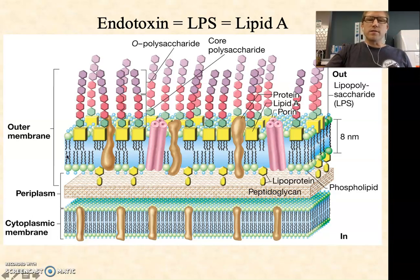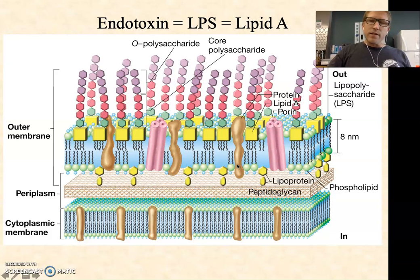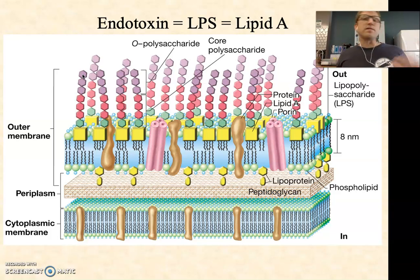Lipid A is a structural part — this is a cross-section of gram-negative bacteria — it's a structural part of the lipopolysaccharide molecules that make up the majority of the outer leaflet of the outermost membrane. Gram-negatives have two membranes: an inner membrane and an outer membrane. In the outer membrane, the inner leaflet is made up of typical phospholipids, while the outer leaflet has both phospholipids and lipopolysaccharides, where you've got a lipid component referred to as lipid A, and a long polysaccharide relatively specific to that particular species or even strain of gram-negative bacteria.